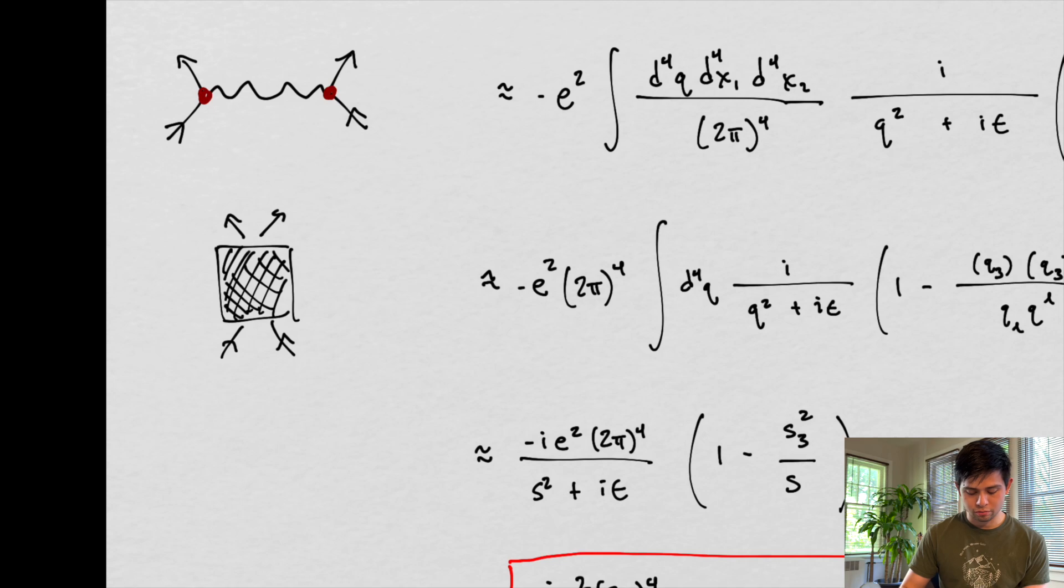We have two vertices, so that means this is a second order approximation to a Feynman diagram in which we have positrons and electrons. So the Bhabha Scattering is really just a second order approximation to a scattering process.